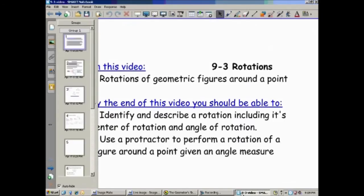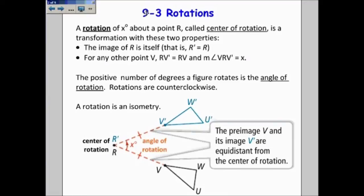So the book's definition is a rotation of X degrees about point R, called the center of rotation, is a transformation with these two properties. The image of R is itself. So if we want to reflect point R, it's going to be the same point. R and R prime will be the same. If it's any other point V, then VR prime is equal to RV, which basically means the image will be the same distance away from R as the pre-image. And also that the measure of the angle VRV prime will be the angle of rotation, X. The positive number of degrees a figure rotates is called the angle of rotation. And rotations, at least in this course, will always be counterclockwise.